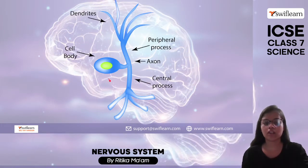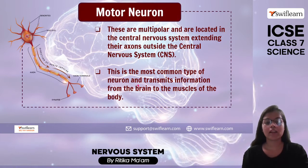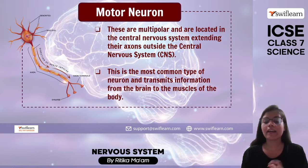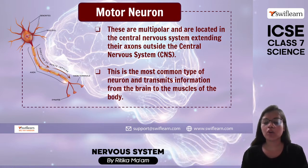Talking about the structure of the sensory neuron, it has a cell body, dendrites, peripheral process, axon, and central process. Next, the motor neuron — these are multipolar and are located in the central nervous system, and they extend their axons outside the central nervous system. It is the common type of neuron which transmits information from the brain to the muscles of our body.